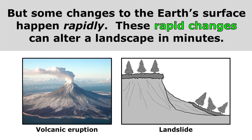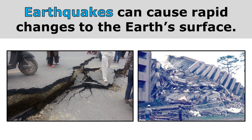But some changes to the earth's surface happen rapidly. These rapid changes can alter a landscape in minutes. Volcanic eruptions and landslides are both examples of things that cause rapid changes to the earth's surface. Earthquakes can cause rapid changes too — you can see the cracks in the ground and the destruction caused by an earthquake, and these things happened very quickly.